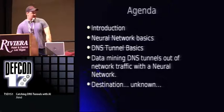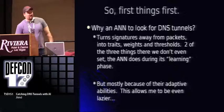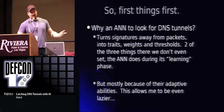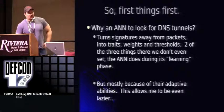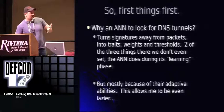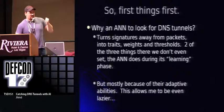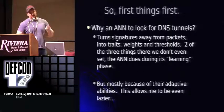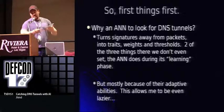We've covered neural network basics and DNS tunnel basics. Why use an artificial neural network to look for tunnels? I wanted to get away from packet counting, which is how most things work — packet counting has very limited returns. I wanted to turn away from packets into traits, weights, and thresholds. If you're using a neural network, all I have to worry about are traits. The neural network will self-adjust the weights and thresholds during the learning phase. All we have to do is come up with good traits, feed them to a neural network, give it an answer sheet so it can learn what it's doing correctly, and it should do the rest itself.